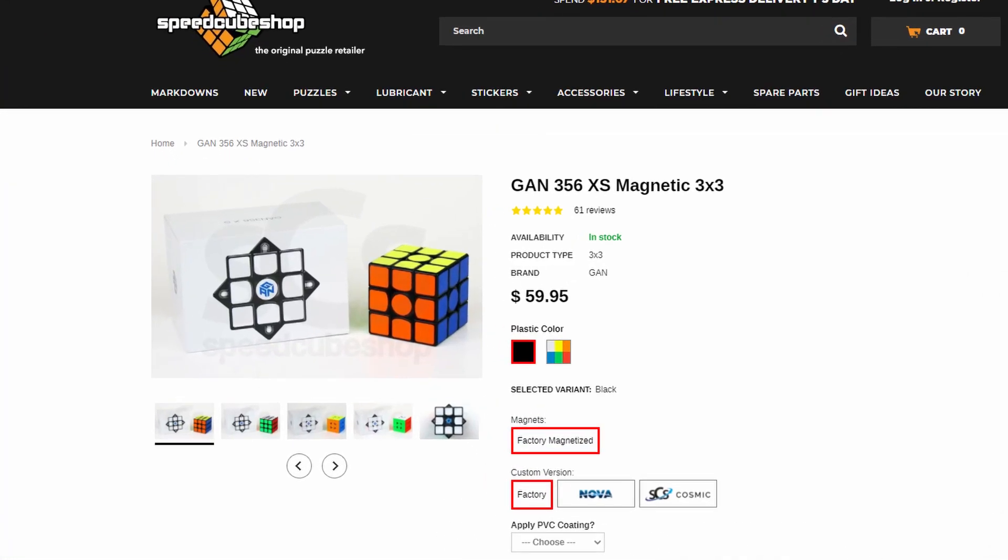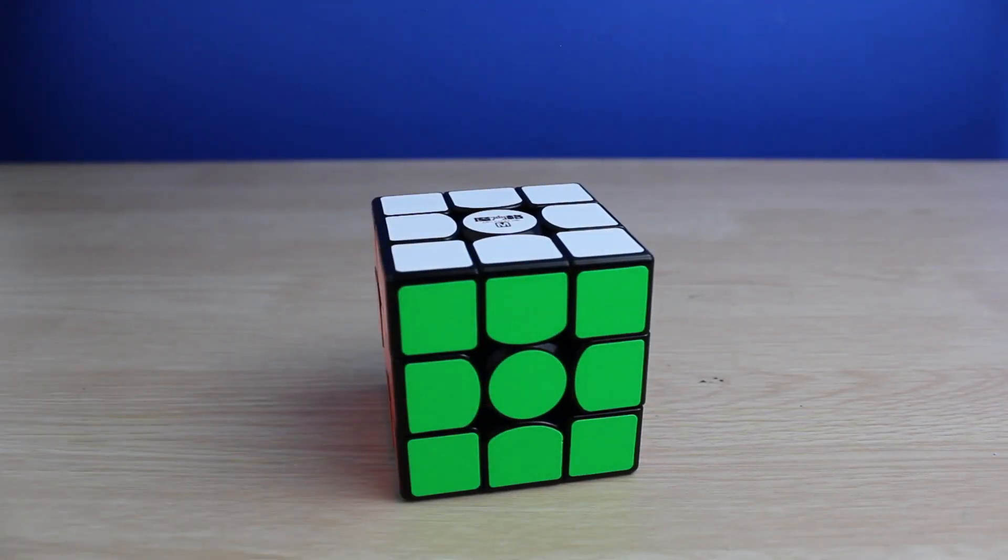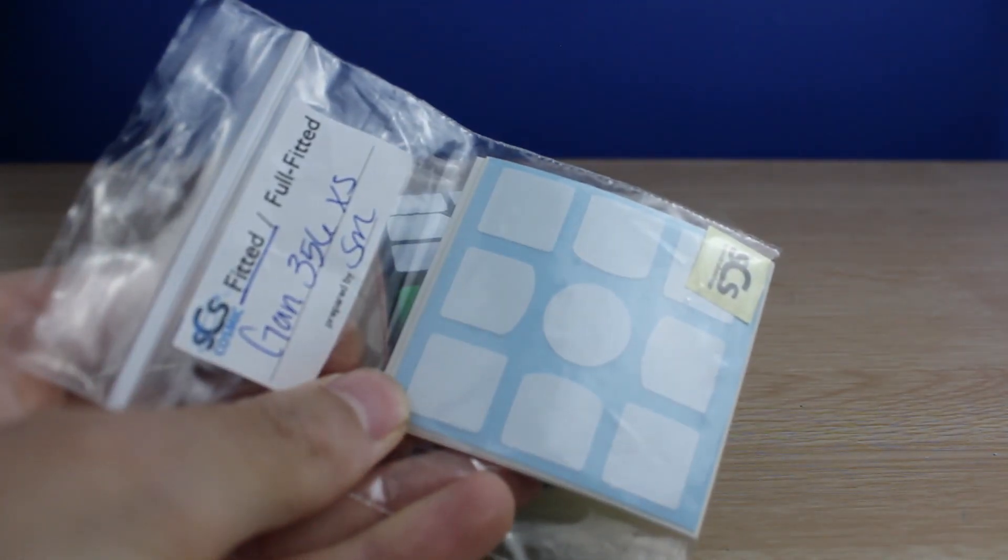This is a stickered GAN XS. I wanted a stickered GAN XS. This is not a stickered GAN XS. These are GAN XS stickers.